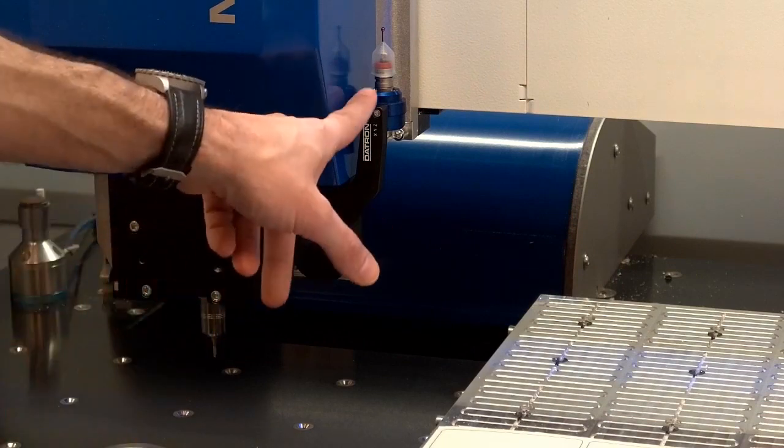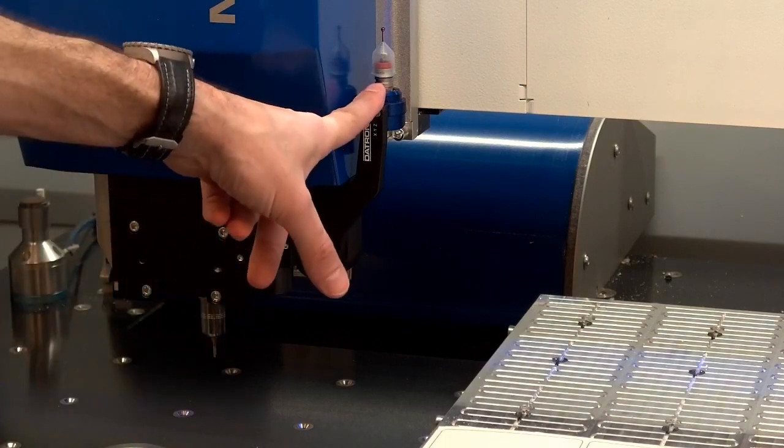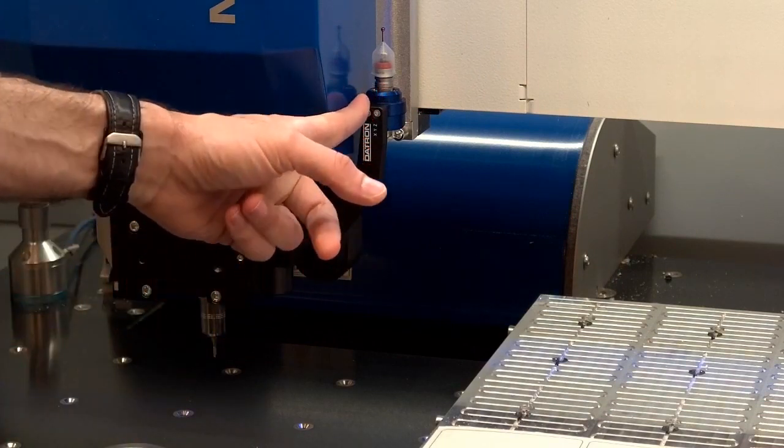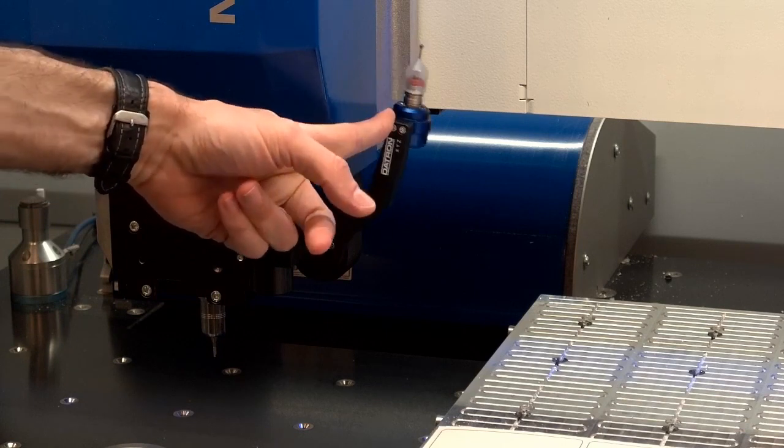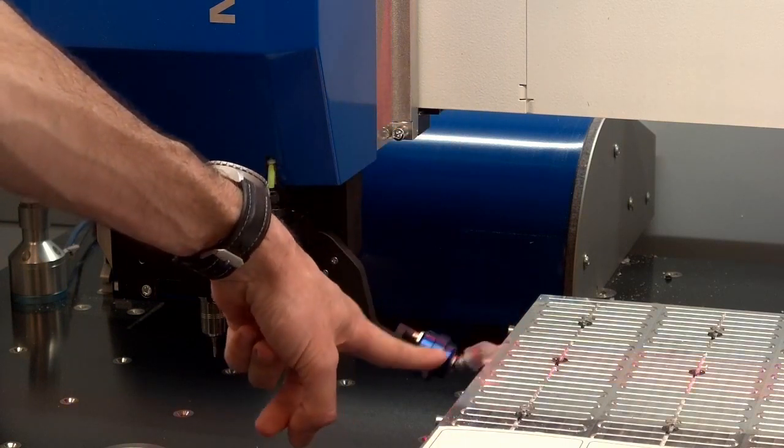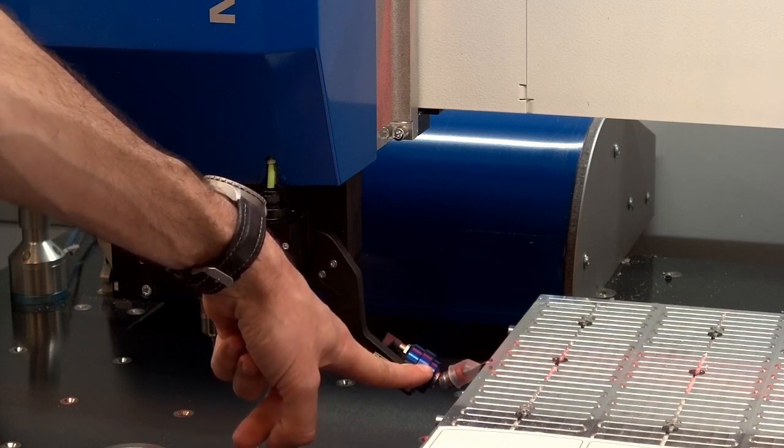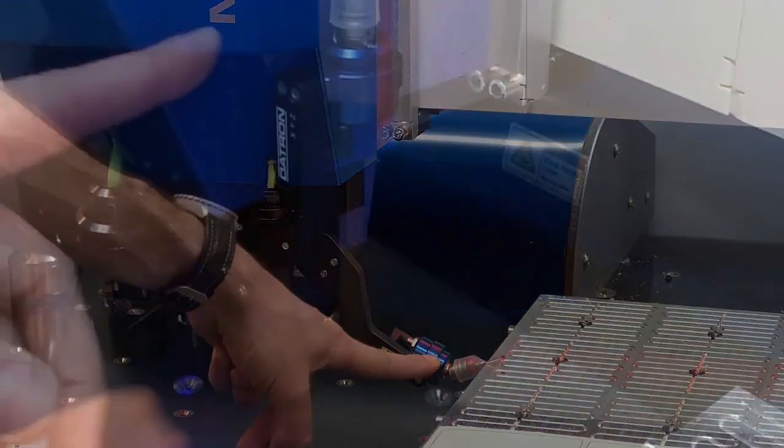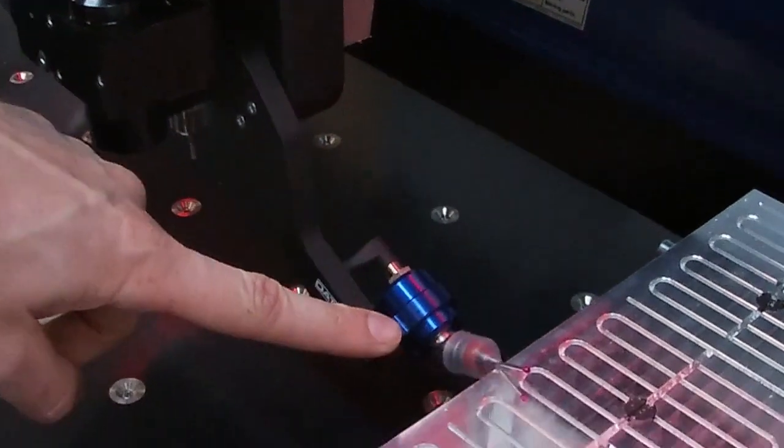There's one really cool thing about the TP20 Renishaw probe that we have here: it's magnetic breakaway. Something I don't really see a lot throughout the industry is that if you're going to have an accident with this, it actually has a magnetic coupling to either minimize the amount of damage or mitigate it completely, since it can detach fully.